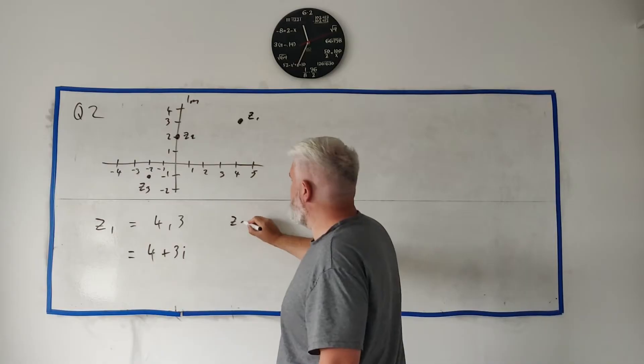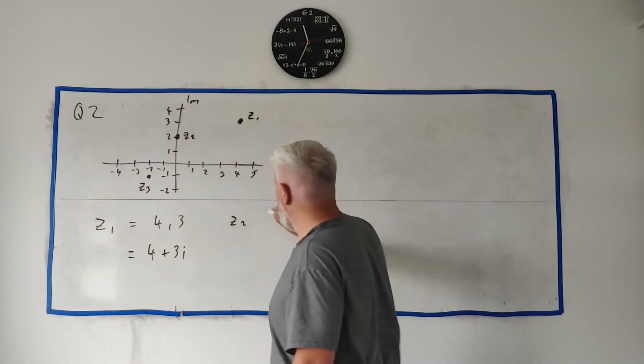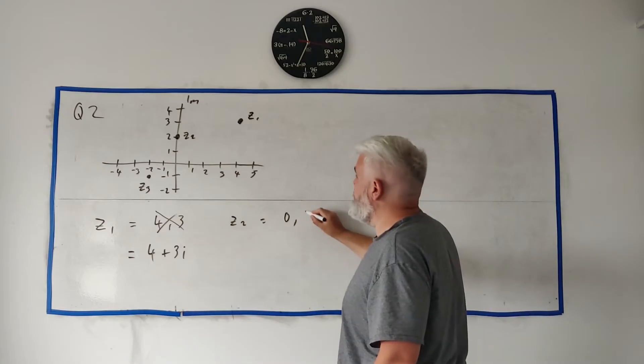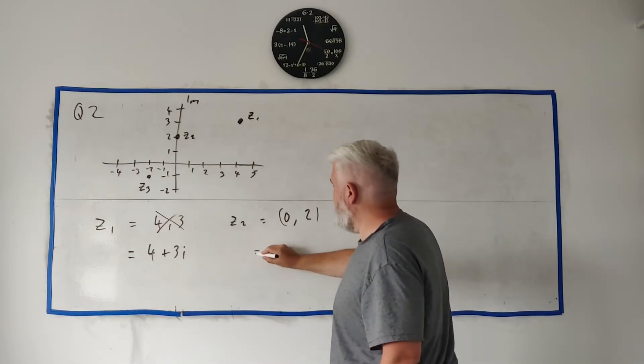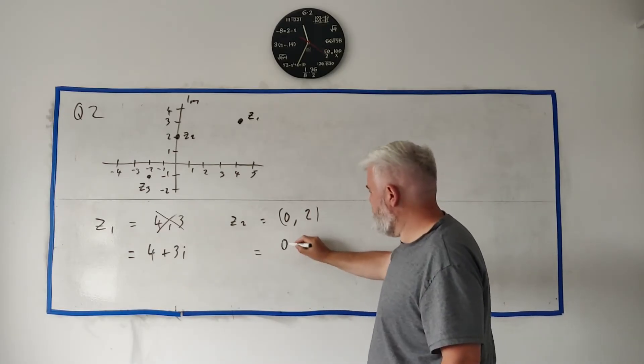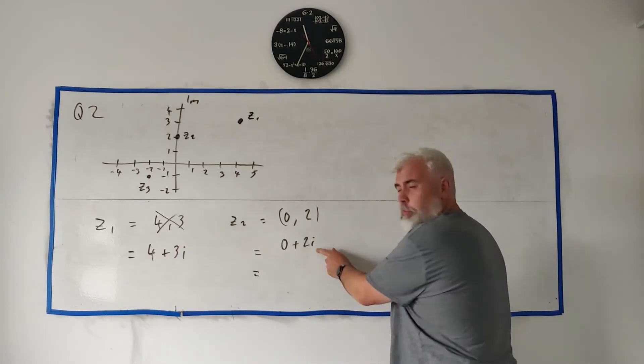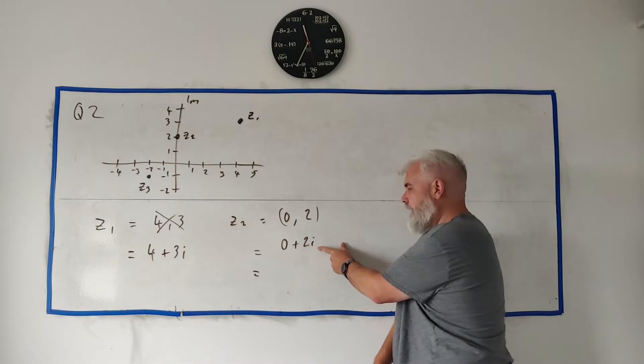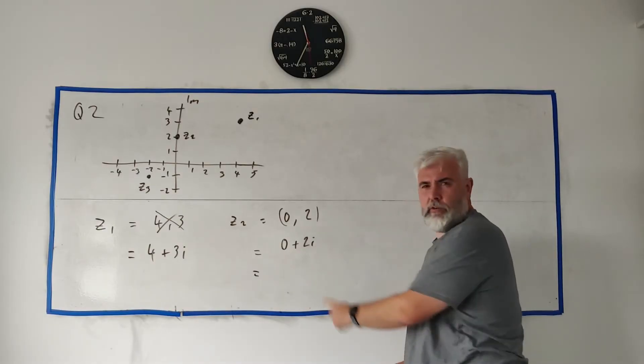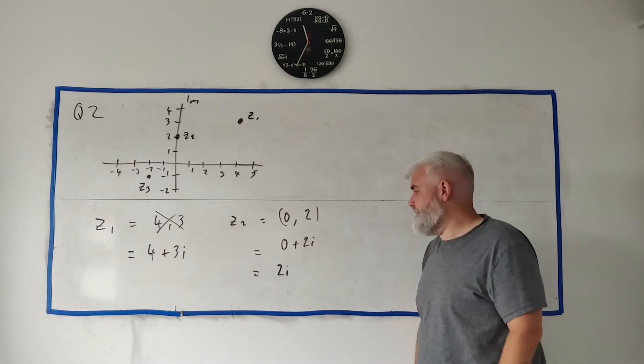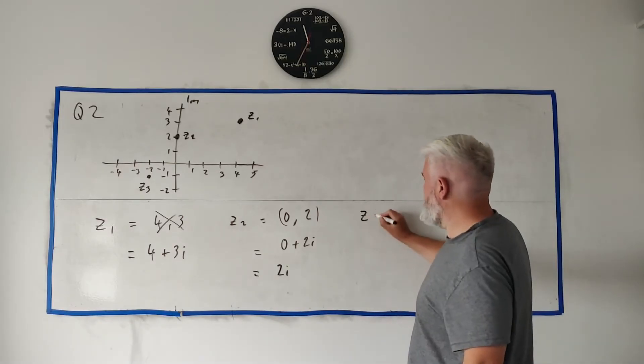They told you in fact to write a plus bi. Shouldn't look like this. It looks very similar though. It's 4 plus 3i. That's how we write complex numbers. Same with Z2. Z2 here. It's not 0, 2. It's sort of 0 plus 2i, although we don't usually, you will get full marks for that. It's not how I would write it though. I don't bother writing the 0. I would just write 2i.